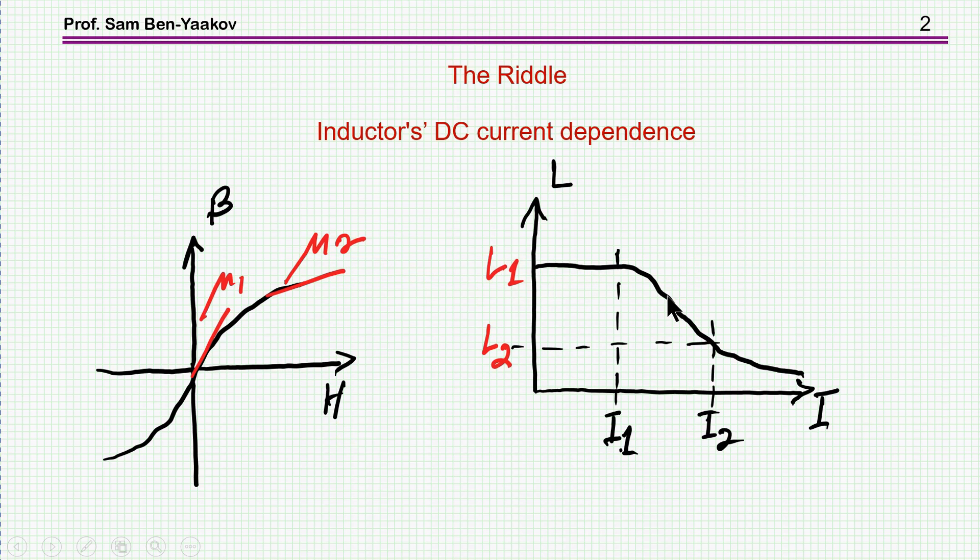In a previous video, I posed this riddle. Suppose we have an inductor which is built around a non-linear ferromagnetic core, which has this type of BH curve. We see here that this is, of course, non-linear. There is a curvature here as the core of ferromagnetic material goes into saturation.